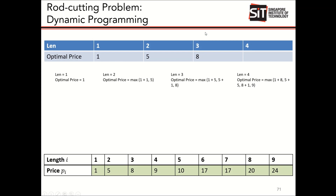If I cut into two and two, I take both values from the optimal price table: five plus five equals ten. If I cut into three and one, I take eight from the optimal table and one from the price table, giving eight plus one. If I don't cut it, the value is nine. The optimal value is ten — cutting into two by two. This is the formula to solve this problem.